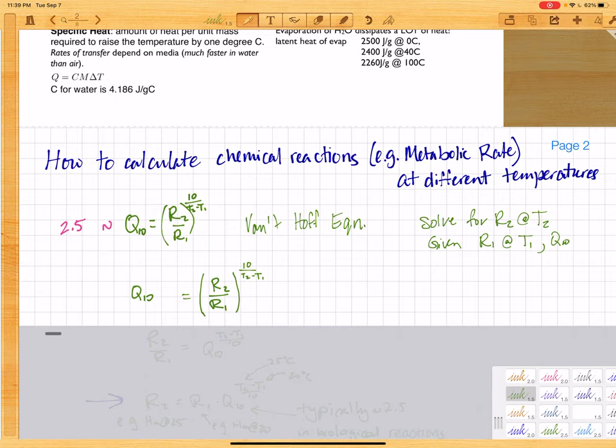First of all, we want to get rid of this exponent. So how do you do the inverse of that operation? Well, you just raise it to the inverse of that power, so T2 minus T1 over 10. So it's T2 minus T1 over 10, both sides.